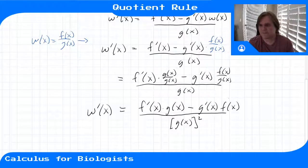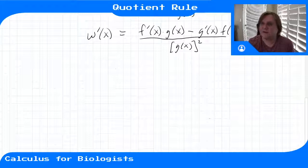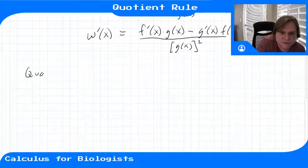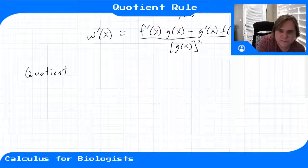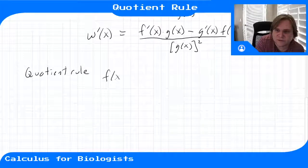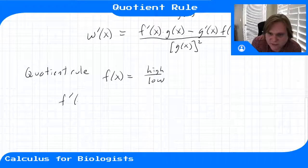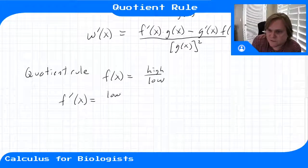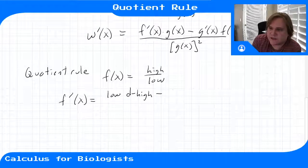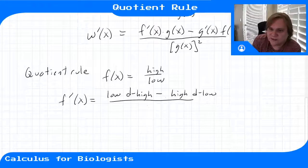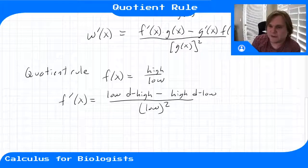There's an easy way to remember the quotient rule. For a function written as high over low, the quotient rule says f prime of x equals low d high minus high d low — meaning the low function times the derivative of the high, minus the high function times the derivative of the low.